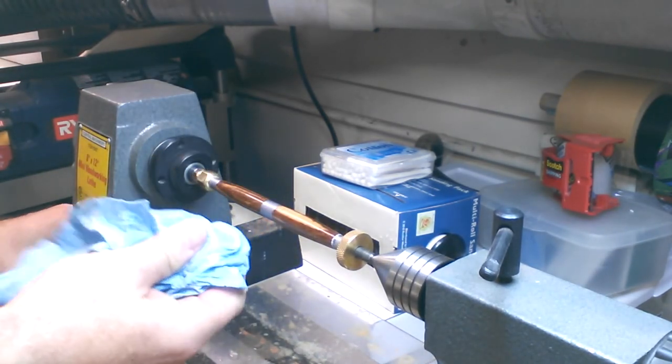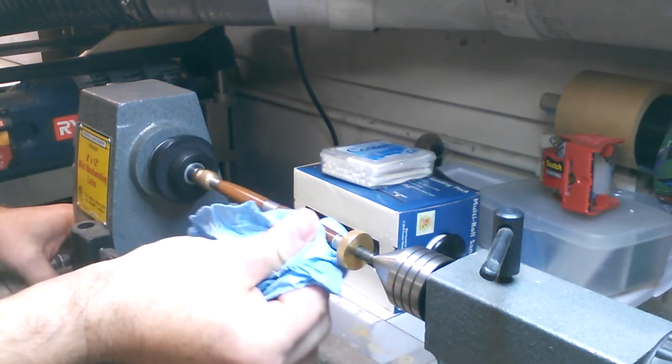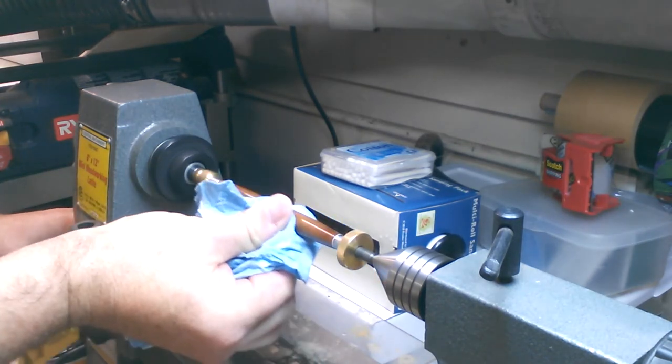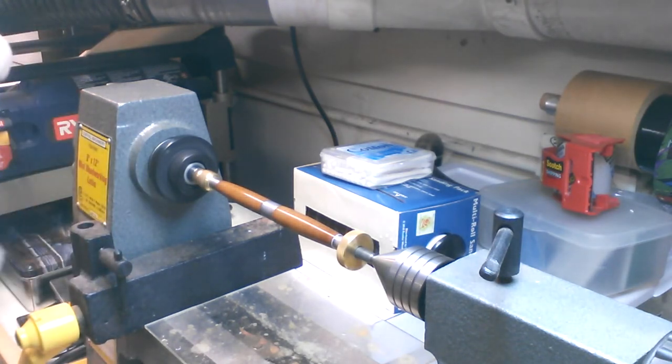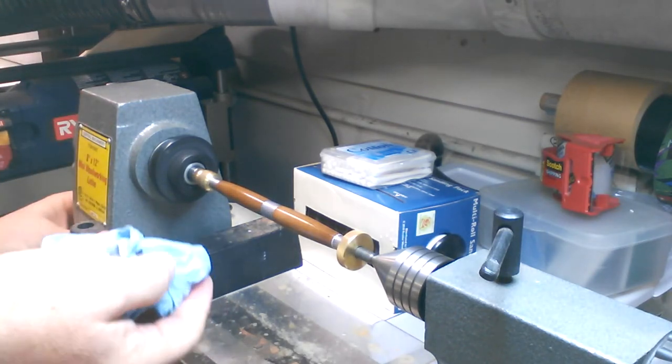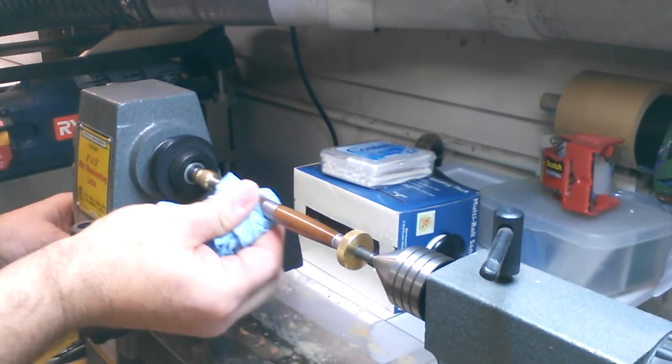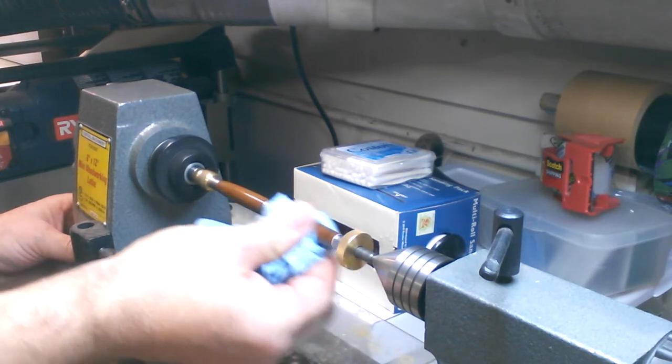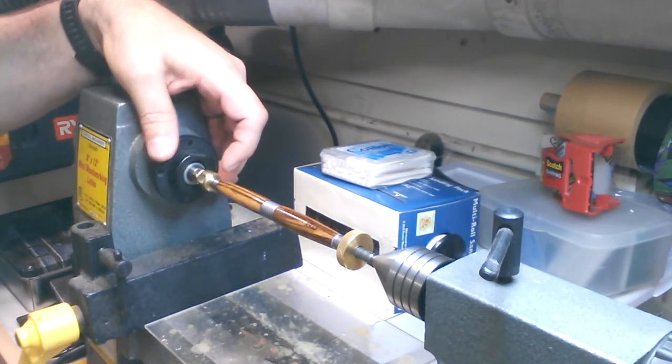Make sure your lathe is on low when you start this out. And then just kind of wipe it in. And then pick up the speed a little bit. The dry section of the towel. And do a little bit of buffing. I don't want to stay in one spot too long.